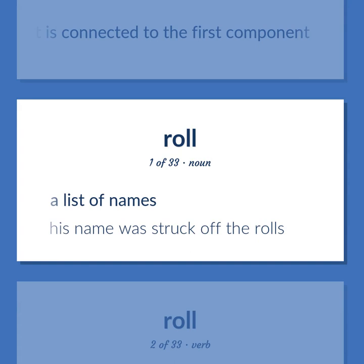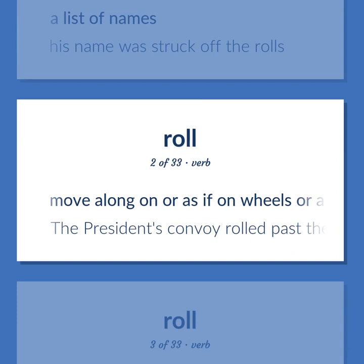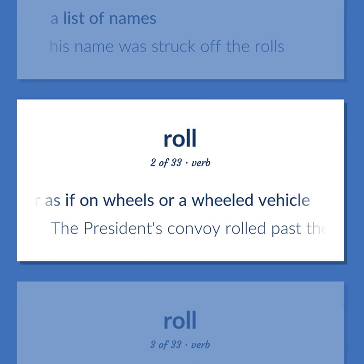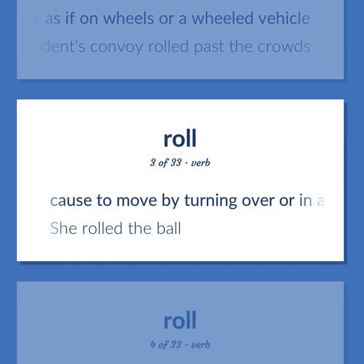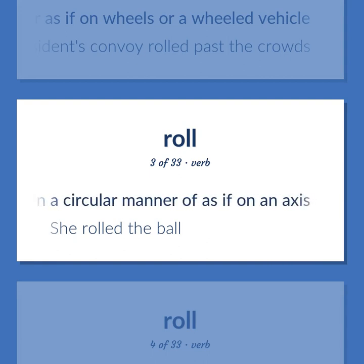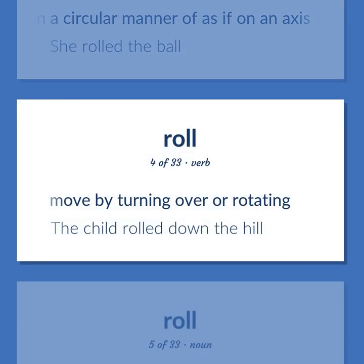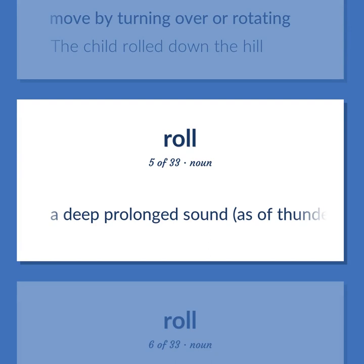ROLL: A list of names — 'His name was struck off the rolls.' Move along on or as if on wheels or a wheeled vehicle — 'The president's convoy rolled past the crowds.' Cause to move by turning over or in a circular manner, or as if on an axis — 'She rolled the ball.' Move by turning over or rotating — 'The child rolled down the hill.' A deep prolonged sound, as of thunder or large bells.